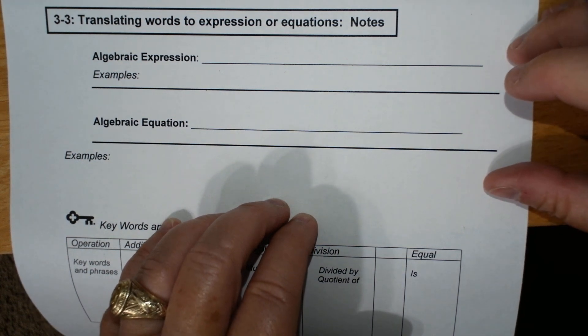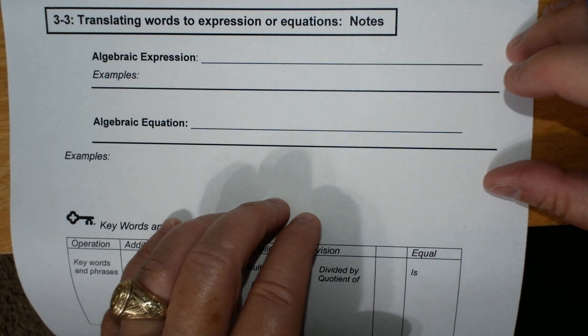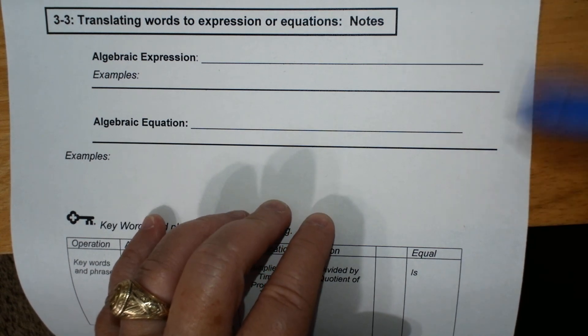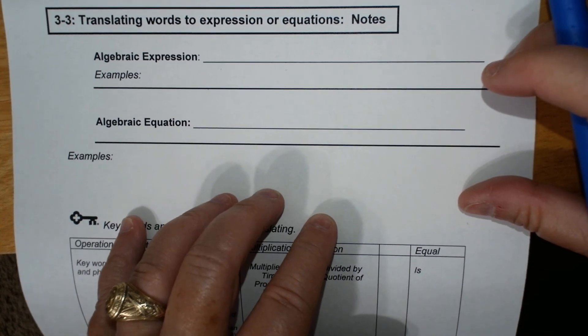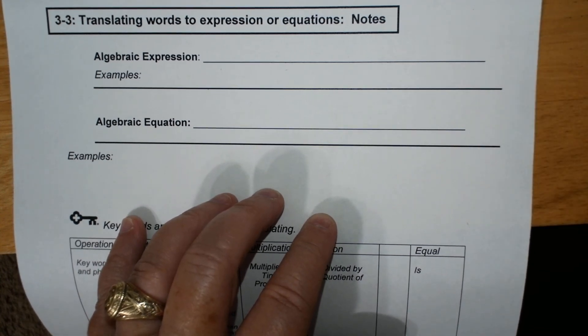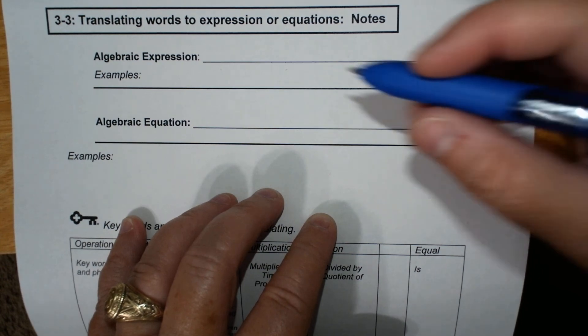This is 3-3, translating words to expressions or equations. This is the notes. I'm going to go over two things that you're going to have to recognize, and that is you're going to have to determine whether something is an algebraic expression or an algebraic equation.